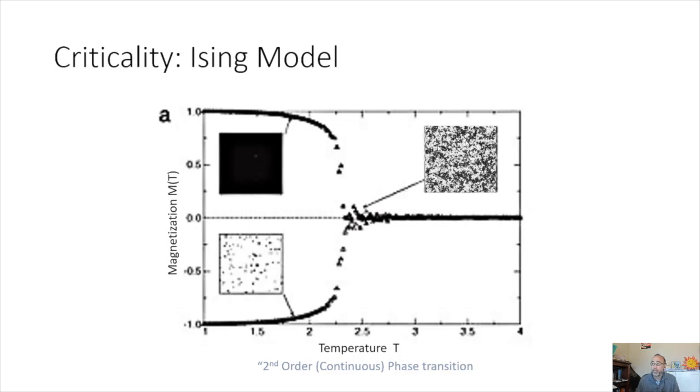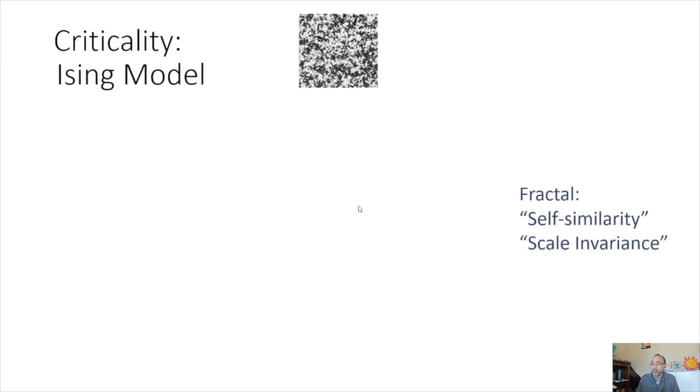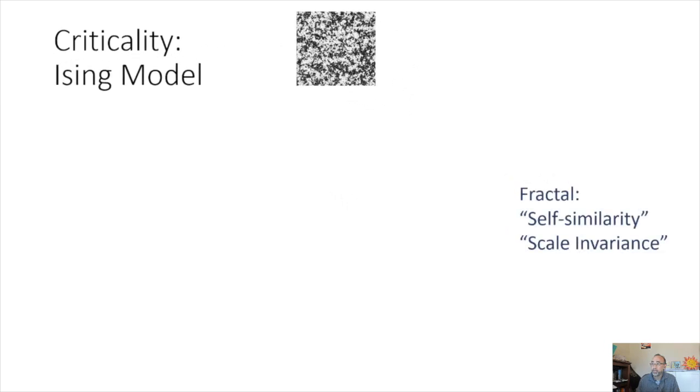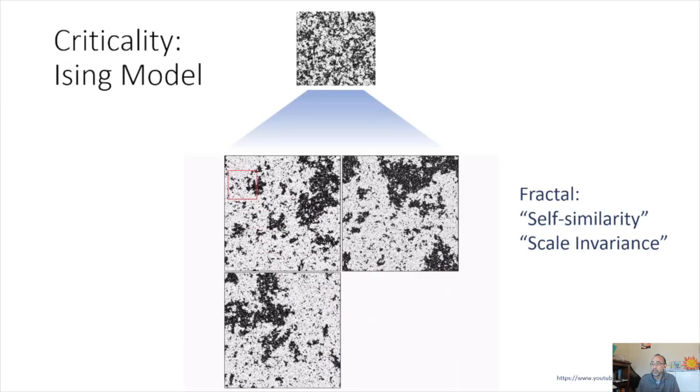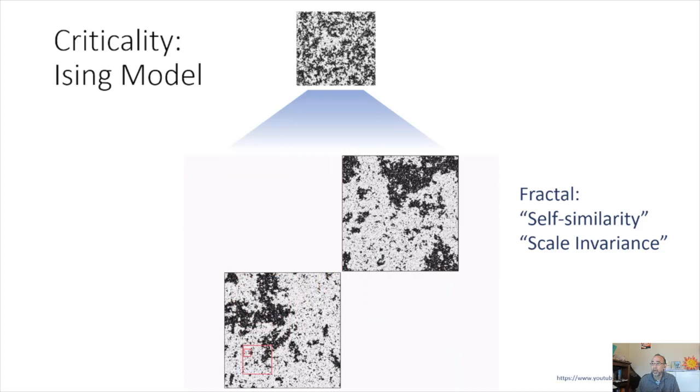However, it is at this criticality location where it's between absolute magnetization to no magnetization, where you see some very interesting patterns. And this is where you begin to see fractal or self-similarities.